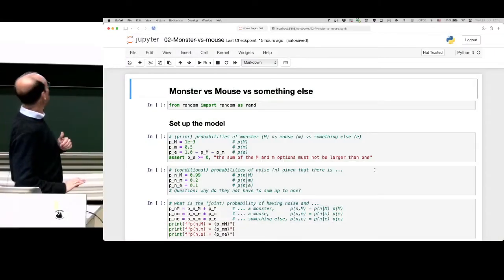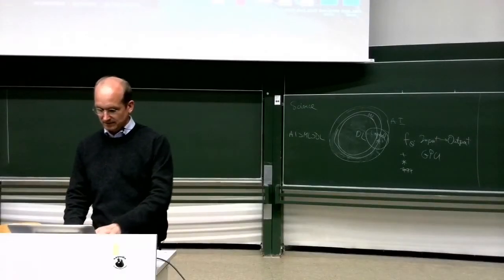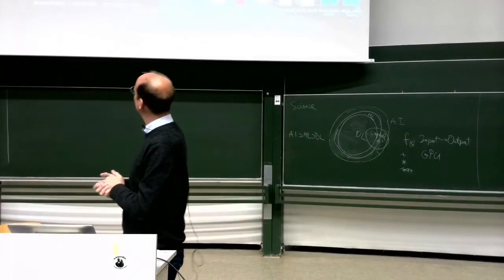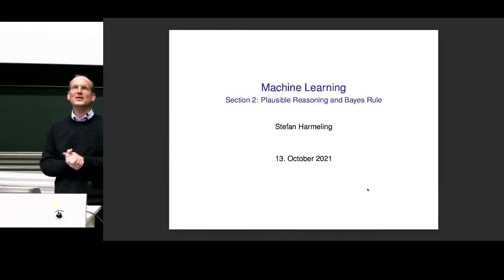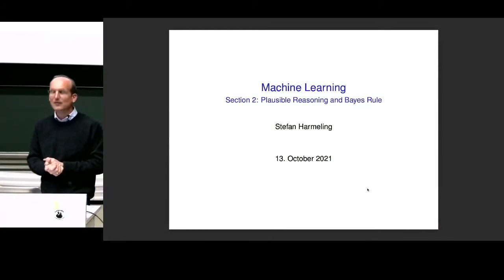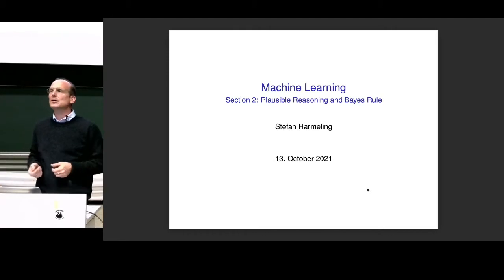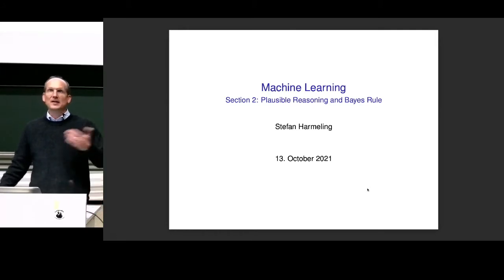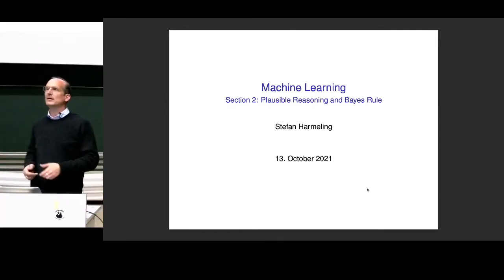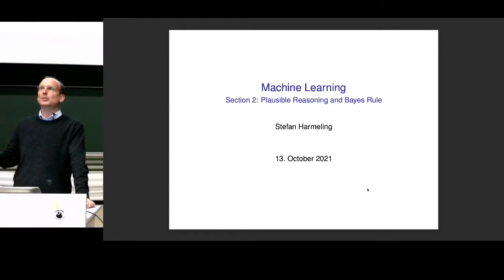Now we will talk about monsters and mice today. Let's get started with section two — plausible reasoning and Bayes rule. Here I will motivate the use of probabilities for plausible reasoning. Maybe a robot or an intelligent machine should reason about the world, and the way to reason could be logic, or logic plus probabilities.